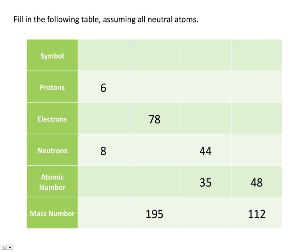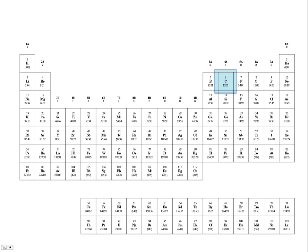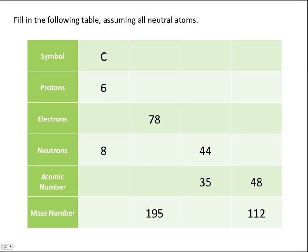Now let's try to fill in the following table, assuming all neutral atoms. We will fill out this table going column by column. In the first column, if something has 6 protons, we know the atomic number must equal 6. Looking up atomic number 6 on the periodic table, we see that element is carbon, with the elemental symbol C. In a neutral carbon atom, the number of protons equals the number of electrons, so carbon has 6 electrons. The mass number equals the number of protons, 6, plus the number of neutrons, 8, which gives us a mass number of 14.